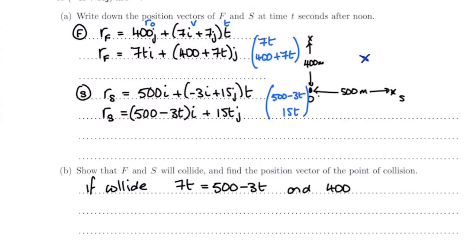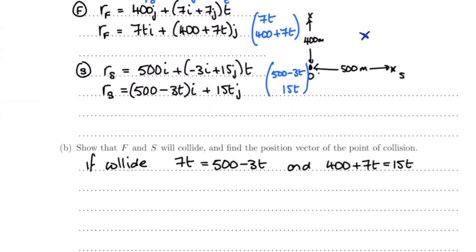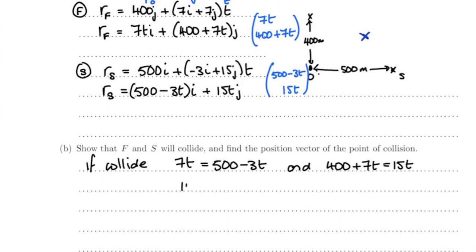Now if you solve both of those, we get 10t equals 500, so t equals 50. And on this side, if we solve that one, we get 400 equals 8t, therefore t equals 50. So therefore the things collide, and they collide when t equals 50.